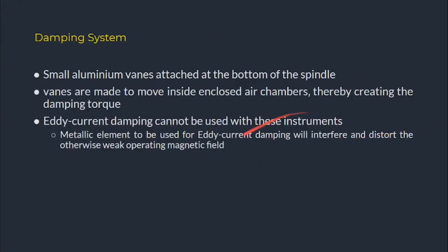For the damping system, small aluminium vanes attached at the bottom of the spindle are moved inside enclosed air chambers, thereby creating the damping torque. Eddy current damping cannot be used because the metal element required for eddy current damping would interfere and distort the otherwise weak operating magnetic field of the dynamometer type wattmeter. Hence a pneumatic type damping system is used.